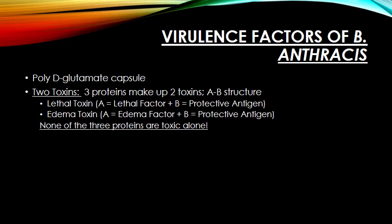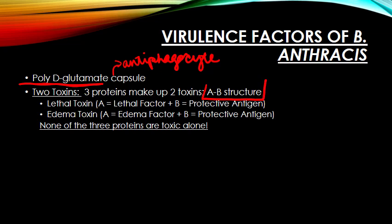Bacillus anthracis is encapsulated, but unlike almost every other encapsulated bacterium it has a protein capsule rather than a polysaccharide capsule — specifically a poly-D-glutamate capsule. D-glutamic acid is not found in humans, and this capsule is antiphagocytic and poorly immunogenic, so the host doesn't make strong responses to it. However, the real thing to know about this organism are the toxins.